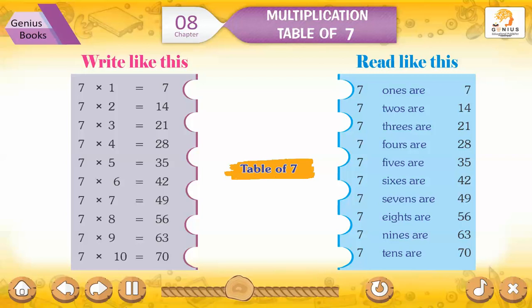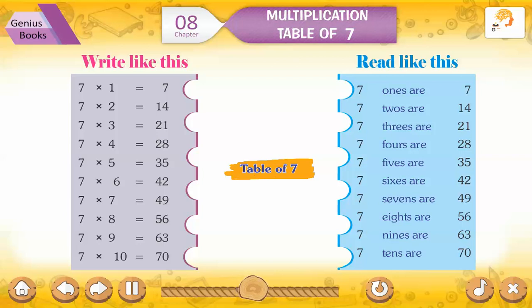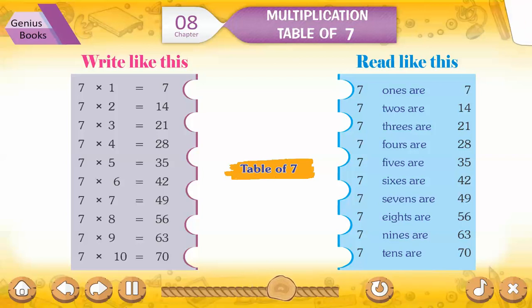7 twos are 14. 7 threes are 21. 7 fours are 28. 7 fives are 35. 7 sixes are 42.